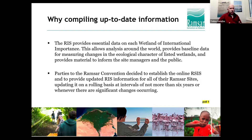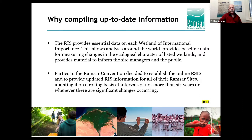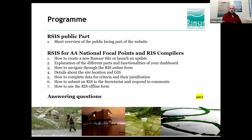The Ramsar parties decided they wanted to have a Ramsar Information Sheet, and that it should be provided at regular intervals. Since 2015 this is fully online through the internet and therefore much easier to handle. Updated information means that no information in the sheet should be older than six years, but it can be updated on a rolling basis. This is the first introduction — my colleague Isabel will go into details and explain the two parts of the Ramsar Sites Information System (RSIS).